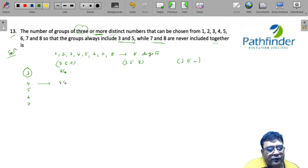If I have to have a group of 5, I need to select 2 from the remaining 4. If I have to have a group of 6, I already have 3 numbers. I need to select 3 more. So, 4C3.